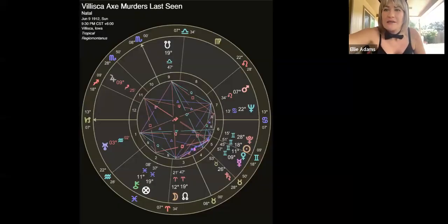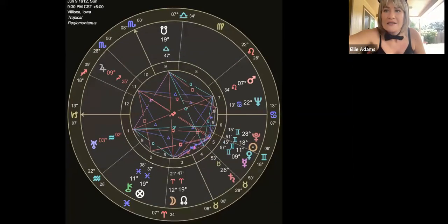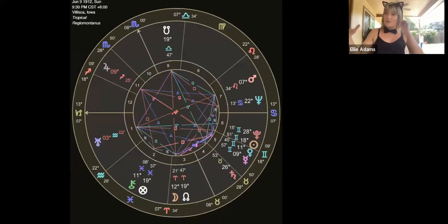So this is the chart for when they are last seen, leaving all eight of them, leaving the church gathering at 9:30. They probably didn't get home until like 9:45 or 10, but since this is when they were last seen, I figured this was the one to work with. What stands out?